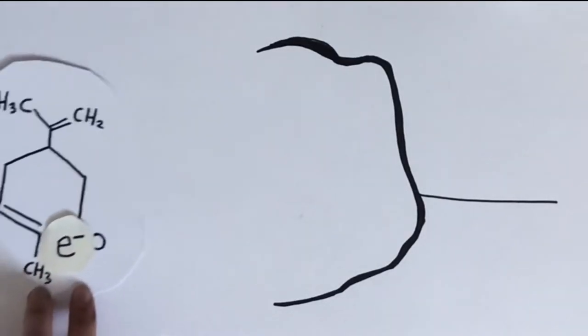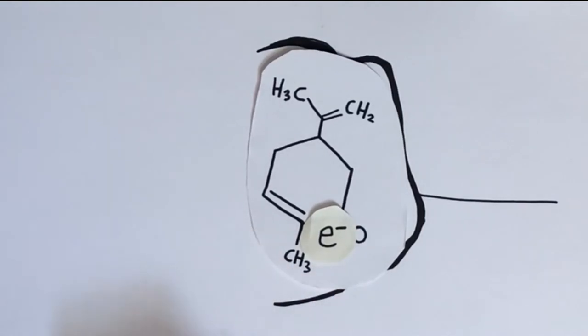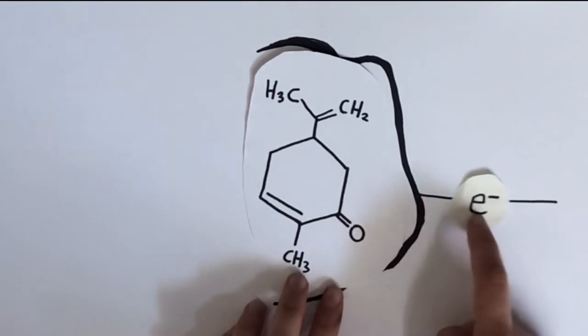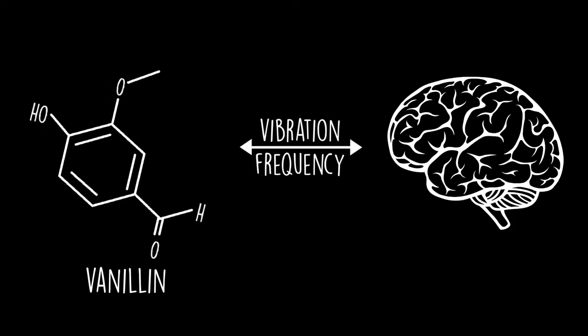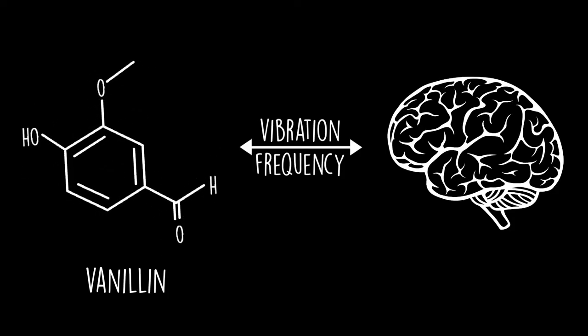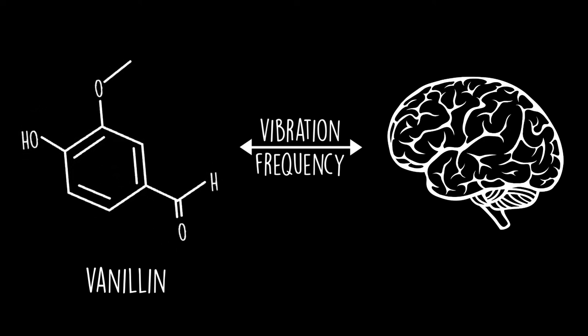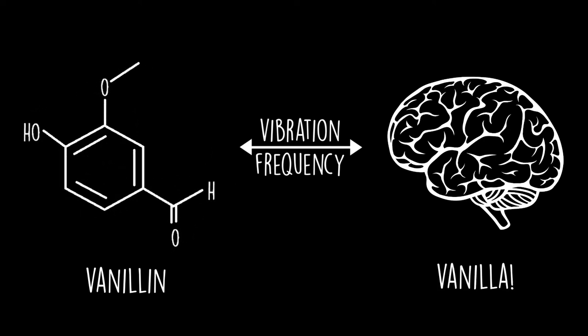With this in mind, we can understand how the presence of an odor molecule allows an electron to pass across our smell receptors and trigger the nerve. This quantum model implies that our brain associates an odor to the frequency at which the concerned molecule vibrates, and several experiments have provided strong evidence towards this theory.